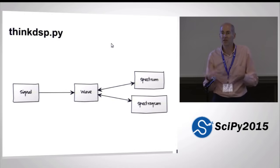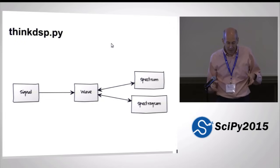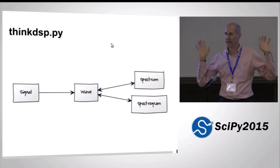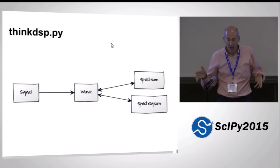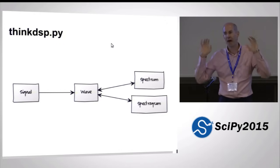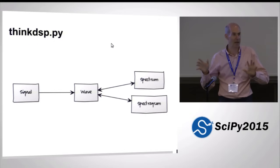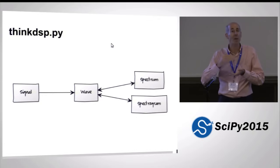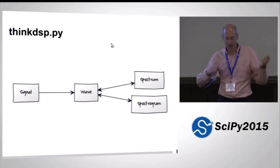The framework that's in the book is think-dsp.py, and these are the basic objects that make it up. The idea is that a signal is just a mathematical entity that represents something that varies in time, and you can discretize that. I'm calling a wave a discrete version of a signal. Once you've got a wave, you can go back and forth between the time domain and the frequency domain. So when you take the FFT of a wave, you get its spectrum. If you break a wave up into a bunch of little pieces and take an FFT of the pieces, you get a spectrogram, and you can go back and forth.